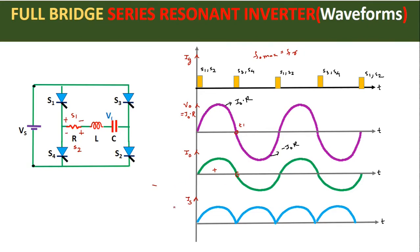The source current will be continuous in nature, but the harmonic contents present in the source current will be greater than the harmonic contents in the half bridge series resonant inverter. This is because after the load current goes to zero only do we fire the other pair of SCRs, resulting in more harmonic content in the source current for the full bridge series resonant inverter as compared to the half bridge series resonant inverter.